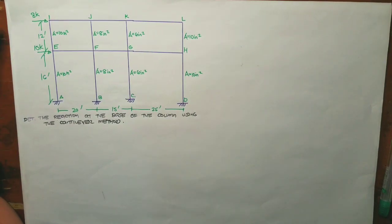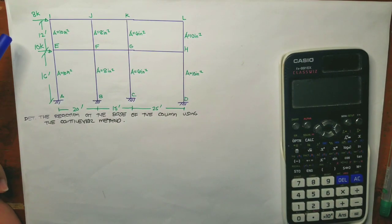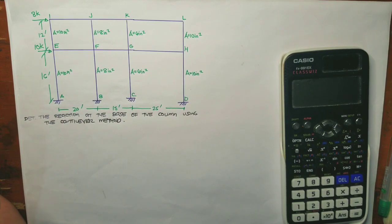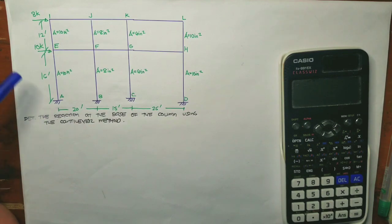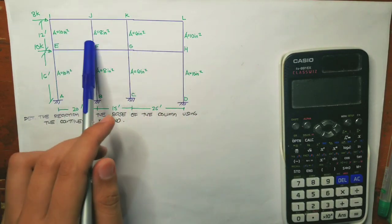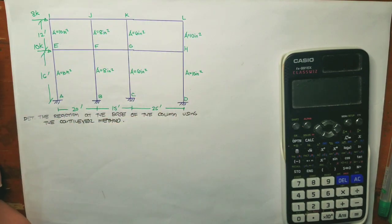Similar to the portal method, the cantilever method has two assumptions. Assumption one: there is a point of inflection at the midpoint of all members. Assumption two: the intensity of axial stress in each column story is proportional to the horizontal distance of that column from the center of gravity of all columns of the story under consideration. The cross-sectional area of each column is relevant here, and the principle is similar to finding a centroid.